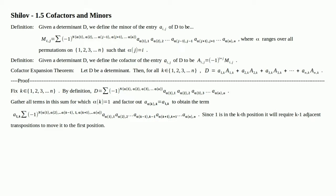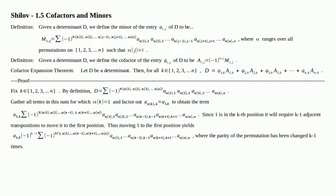Since 1 is in the Kth position, it will require K minus 1 adjacent transpositions to move it to the first position. Thus, moving 1 to the first position yields A sub 1K times negative 1 to the K minus 1 power. The reason for that is because we've performed K minus 1 transpositions. Remember, every time you do an adjacent transposition you change the parity. So we've moved 1 from the Kth position to the first position, which changed the parity K minus 1 times — that's why we have the factor of negative 1 to the K minus 1 power.